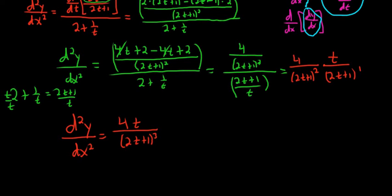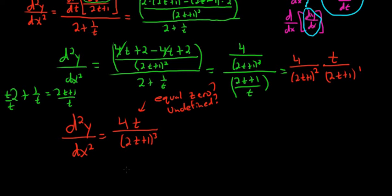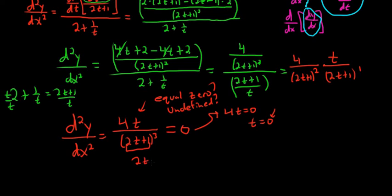It's a good feeling when you've never done a problem before and you get something nice like this. Now we want to see when this is positive and negative. This expression will change signs at two possible places: where it equals zero or where it's undefined. Setting it equal to zero, we set the numerator equal to zero: 4t equals 0, so t equals 0. Setting the denominator equal to zero gives 2t plus 1 equals 0, so t equals negative 1/2.